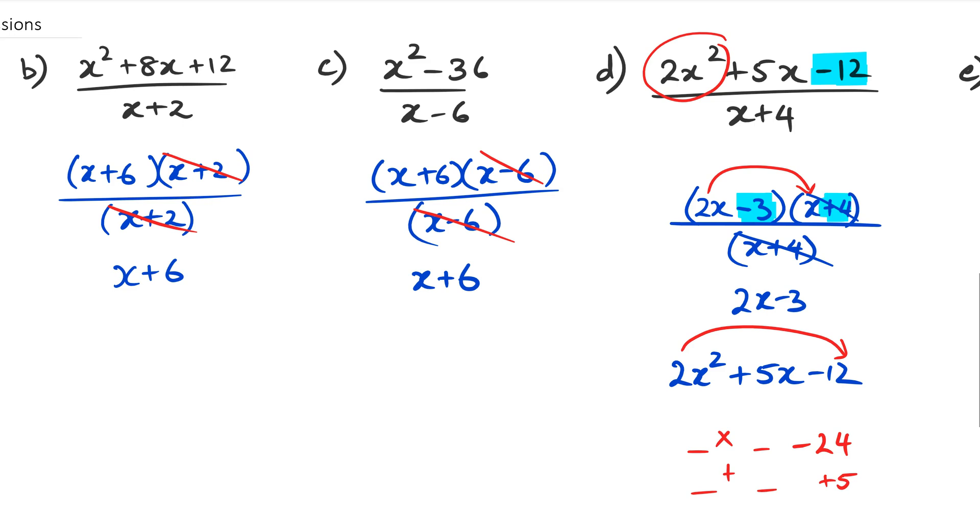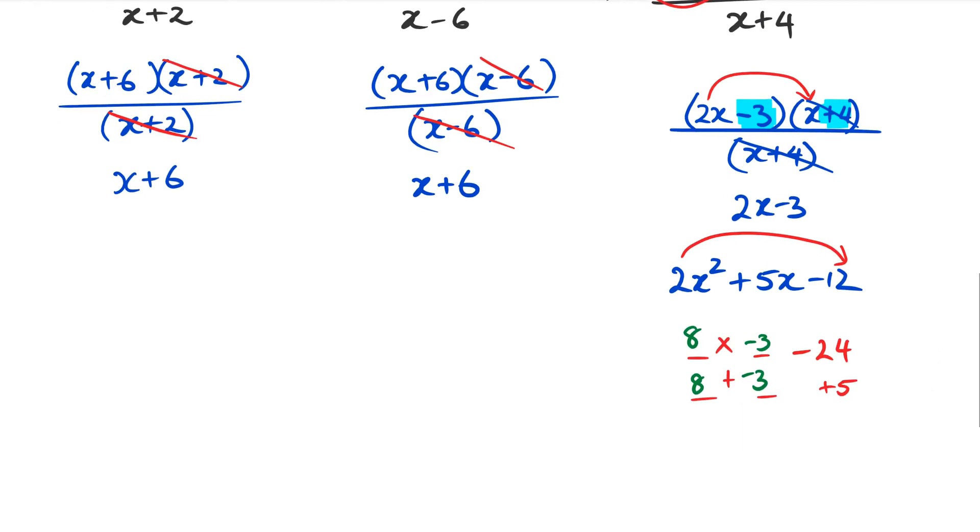So in this case, we know that these two numbers are going to be positive 8 and negative 3. Because 8 plus negative 3 is equal to 5. So that 2X squared, I'm going to split it up as 2X squared plus 8X minus 3X minus 12. So just to reiterate, that 5X right there is now split into 8 and minus 3. And that's where that plus 8 and minus 3X comes from.